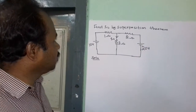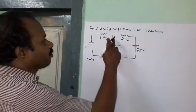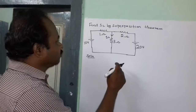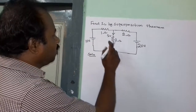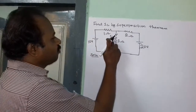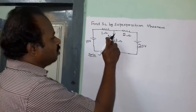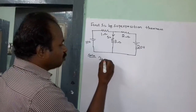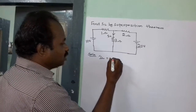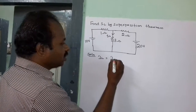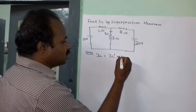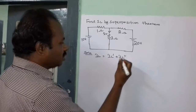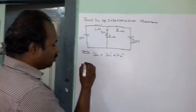Today, we solve a problem by superposition theorem. Here, we need to find the value of IL. By superposition, IL can be written as IL dash plus IL double dash.